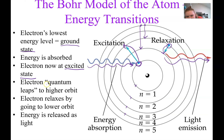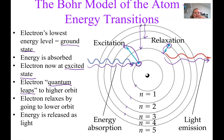When the electron makes those jumps, they're called quantum leaps. It jumps from one level to the next and doesn't exist in between those levels. Like climbing a ladder — your foot leaves the first step and goes to the second without stopping in between. Our electrons are doing the same thing.